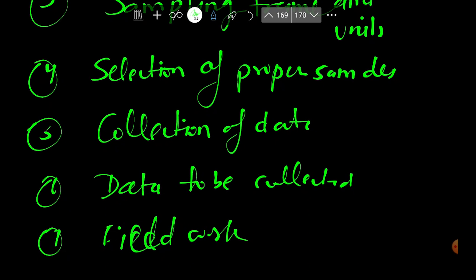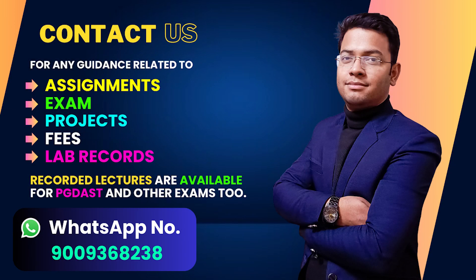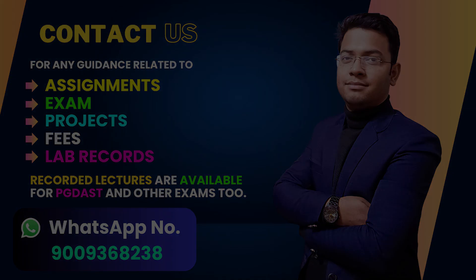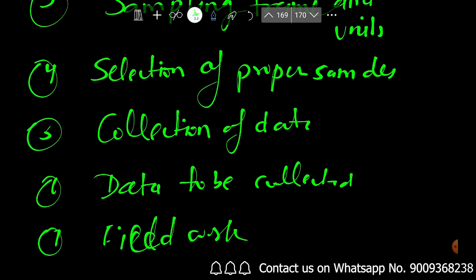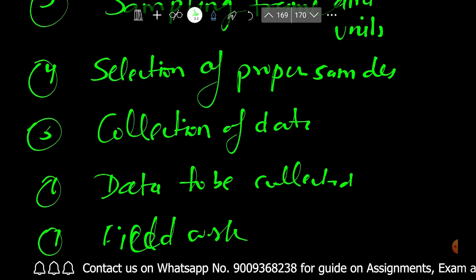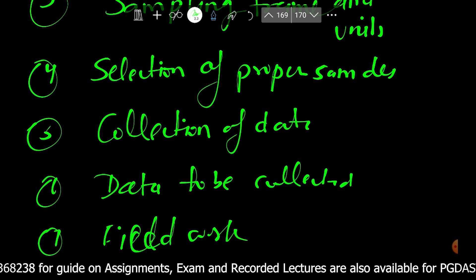The fifth step is the method of collection of data. For data collection, either the interview method or the mail questionnaire method is used. The mail survey is efficient in terms of money and time, but it is not perfect because most people do not fill in all the information in mail surveys.